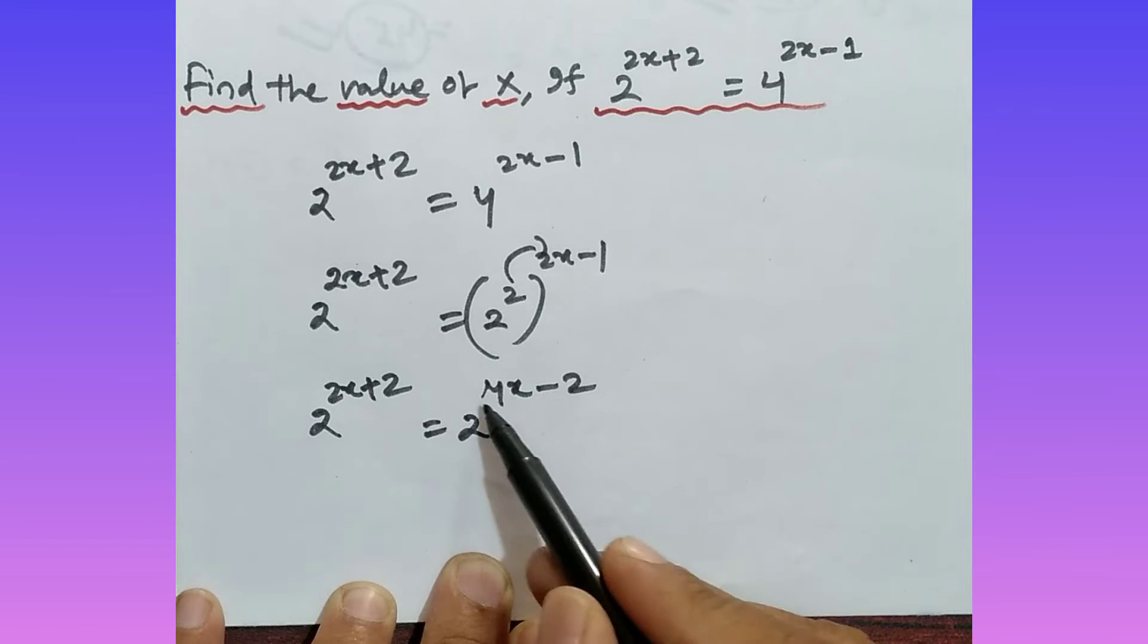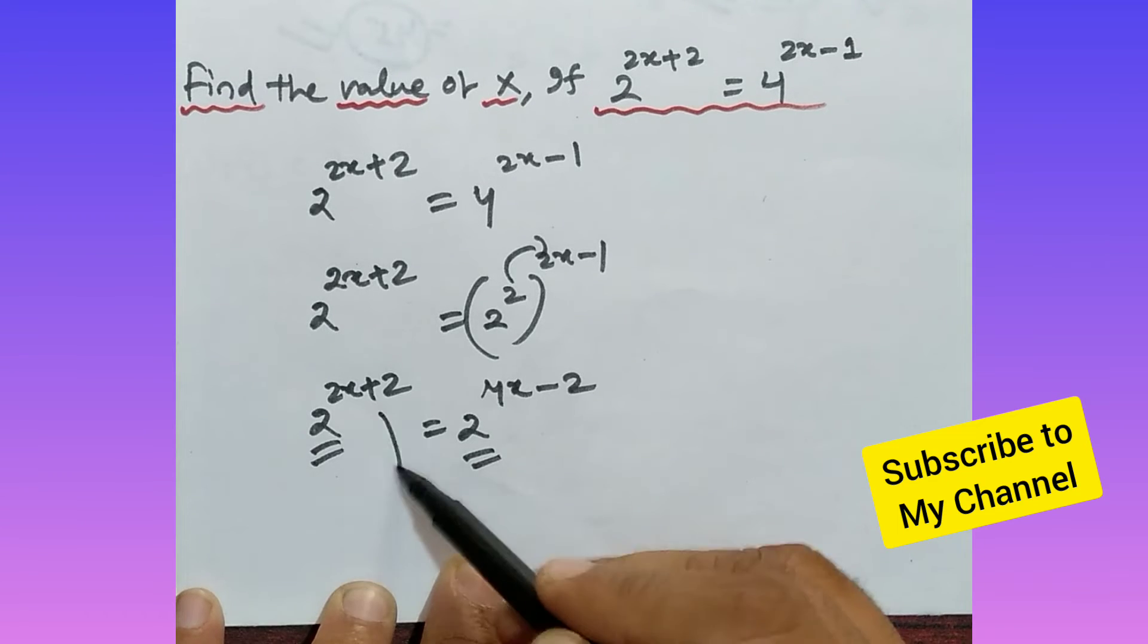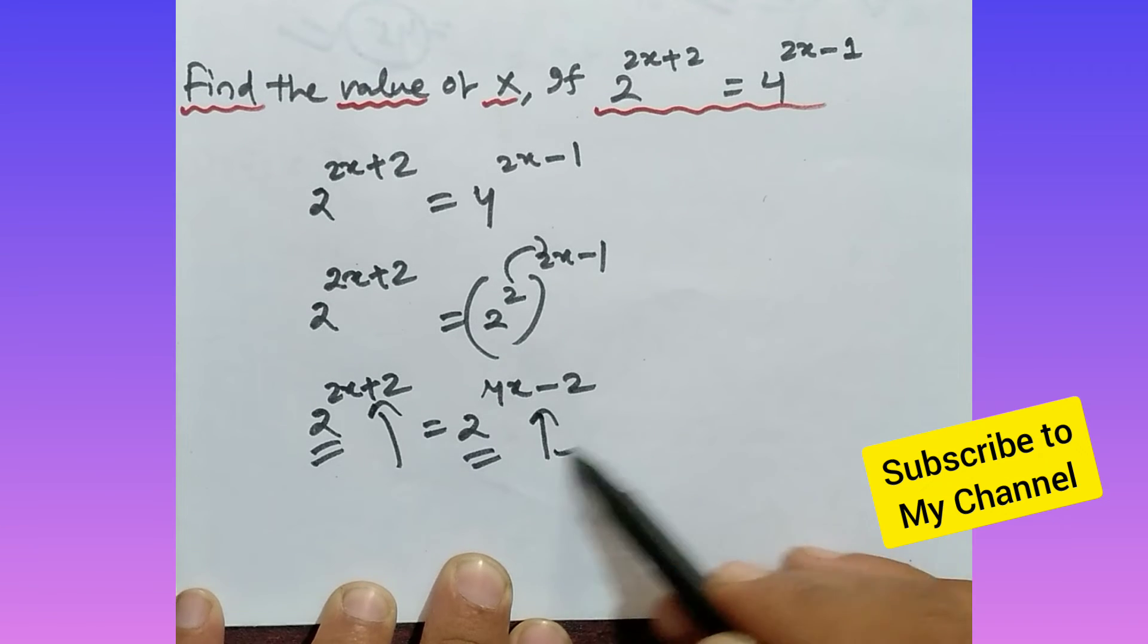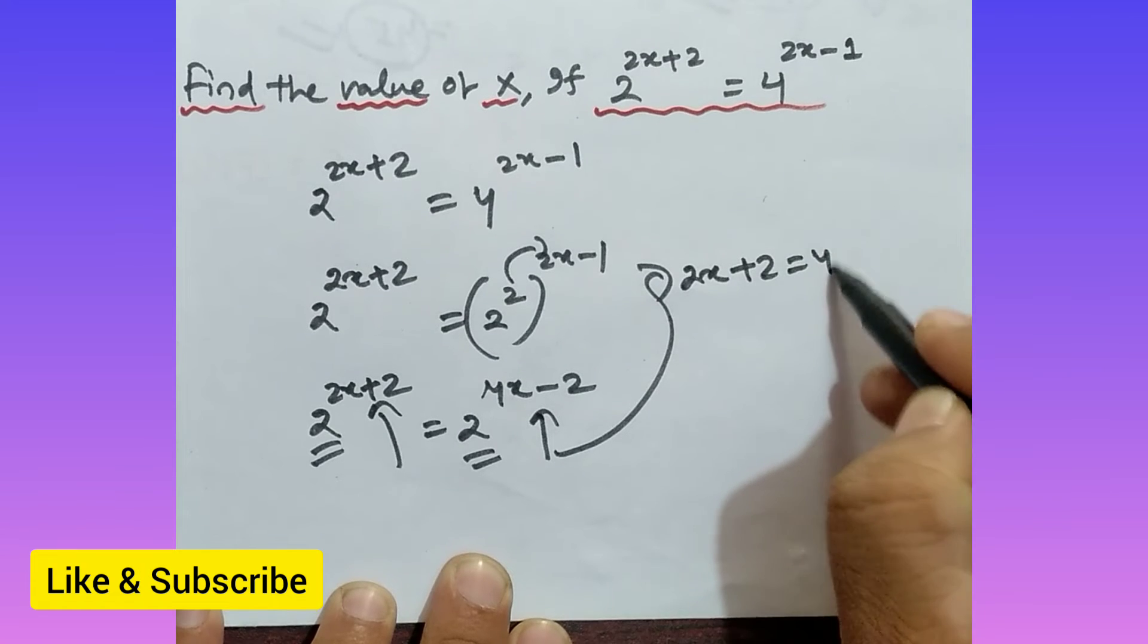So now look at here, 2 to the 2x plus 2 is equal to 2 to the power 4x minus 2, right. So look at the base part, base part equal, now consider the power part over here. Okay, so what you have to write over here? You have to say that is 2x plus 2 is equal to 4x minus 2, right.